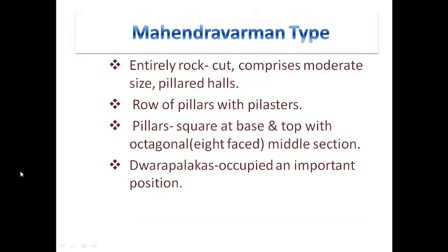Mahendra Varman type: These Rock Cave temples of the Mahendra Varman type entirely comprise moderate-size pillared halls with more cells. The front facade has a row of pillars and pilasters. The pillars are square at the base and top with an octagonal middle section. A heavy bracket provides the capital, and Dvarapalakas occupy an important position.